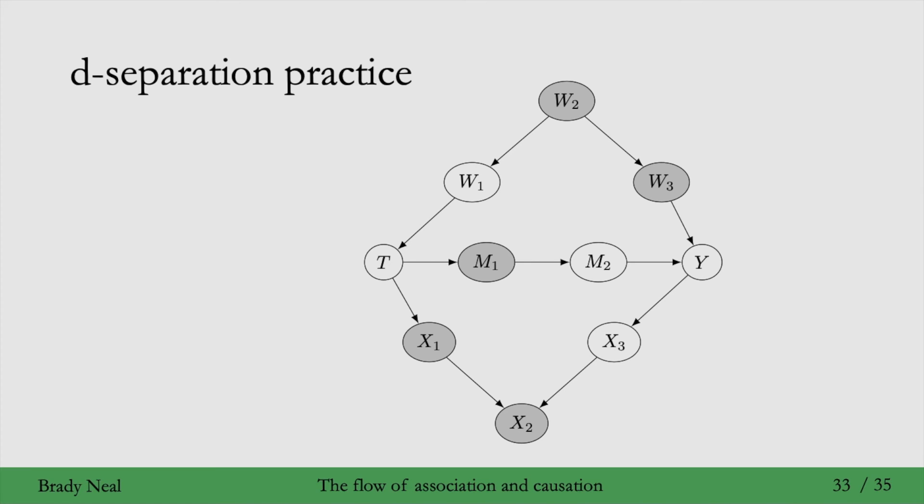Two more questions, and we'll use a new graph for these questions. In this graph on the left here, are T and Y d-separated by W and X2? It turns out that even though W blocks the path from T to W to Y, X2, because it's a descendant of the collider X1, unblocks the path down below. So T and Y are not d-separated given W and X2 because of X2 here. What if we were to not condition on X2? Then T and Y are d-separated because X1 is a collider, so it blocks the path from T to X1 to Y.